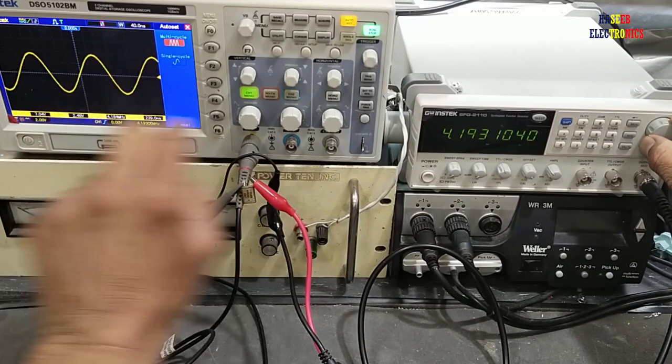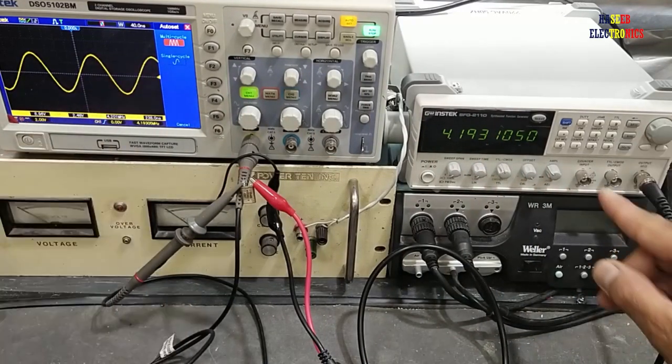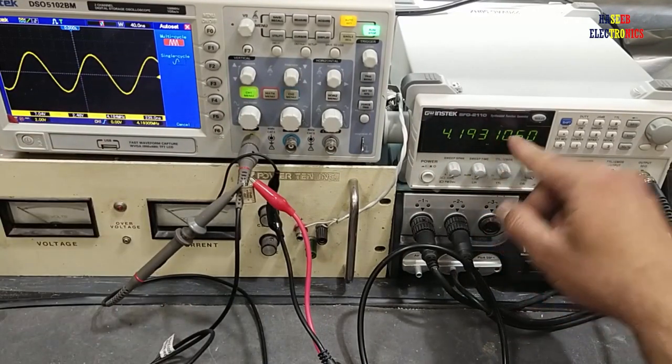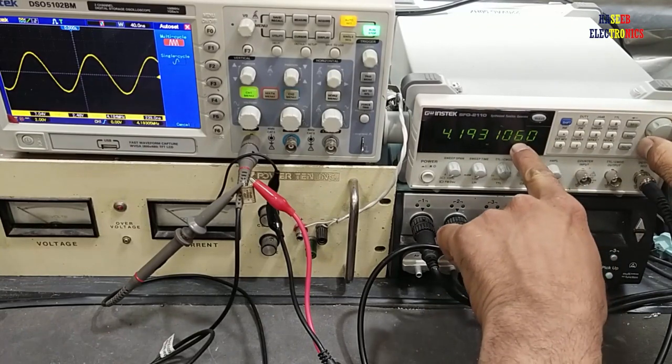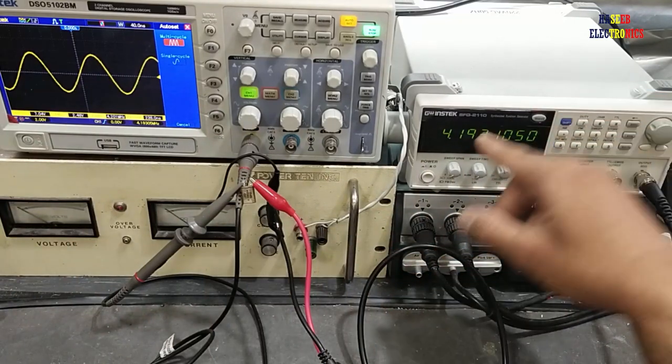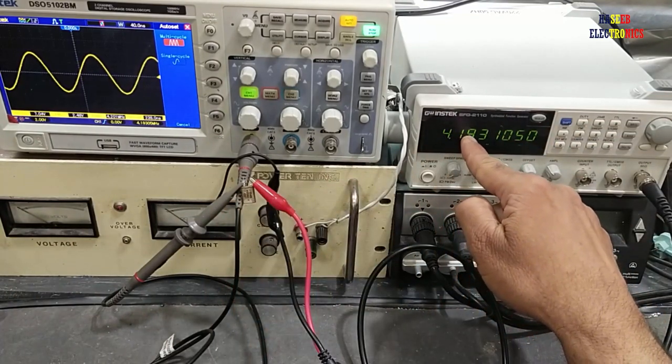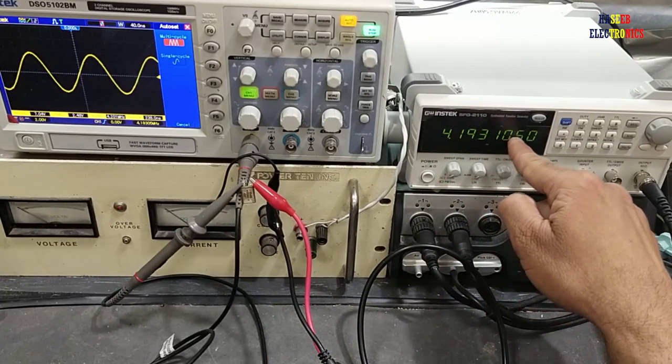When I make it 4.193104, the amplitude will drop, so this is the level. If you increase the frequency, the voltage will drop. This is the exact resonant frequency of this crystal oscillator: 4.193105 megahertz.